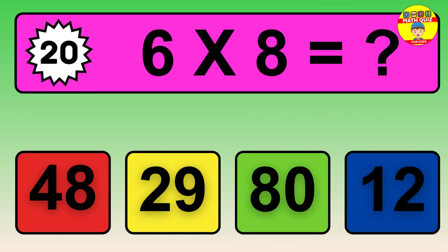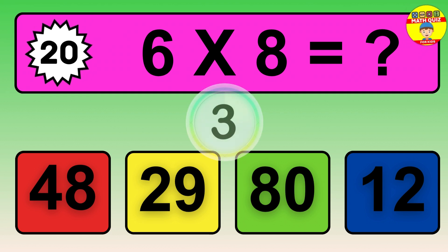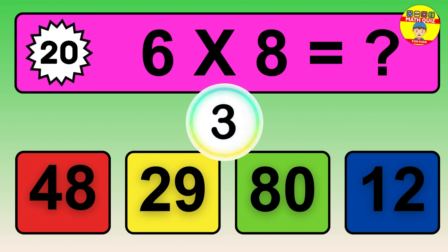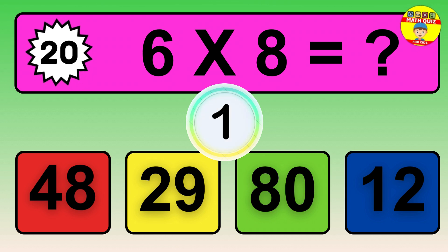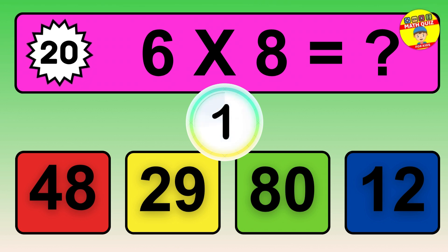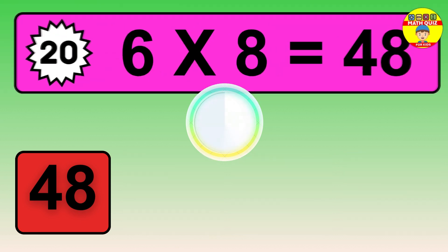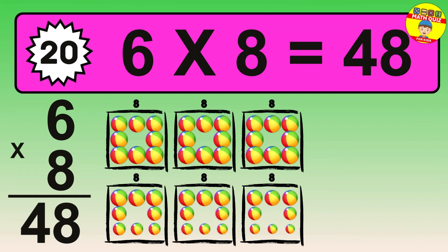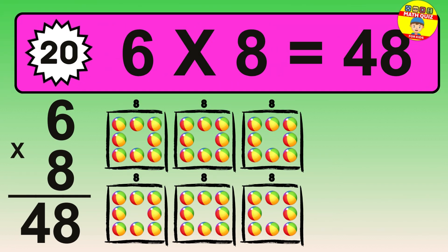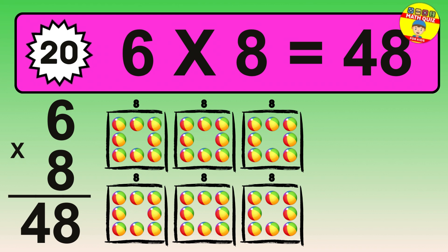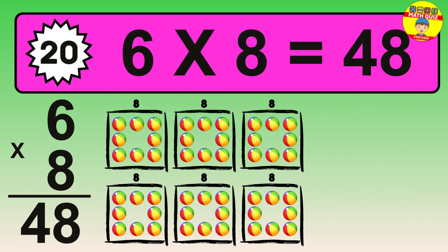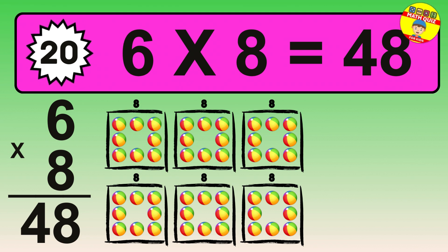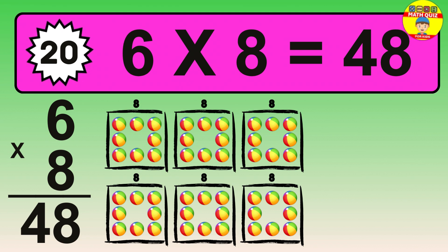Question 20. 6 times 8 equals what? The answer is 6 times 8 is 48. To calculate, we have 6 groups with 8 balls each one. So, how many balls do we have? 48 balls.